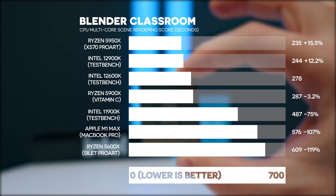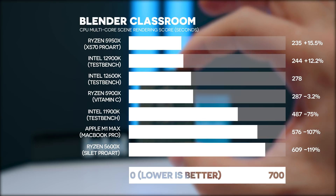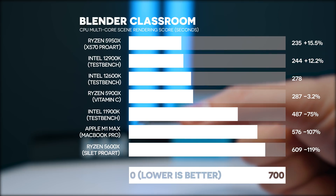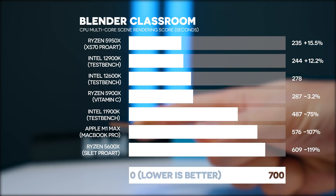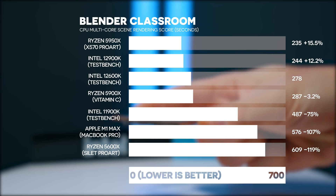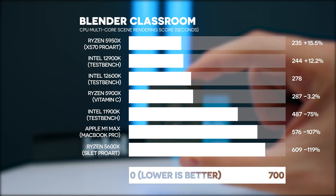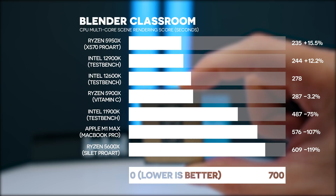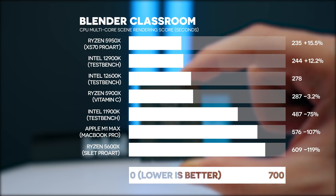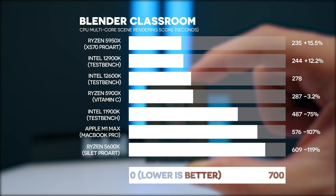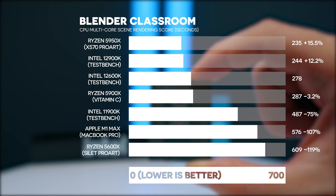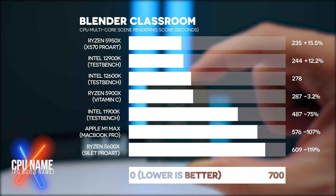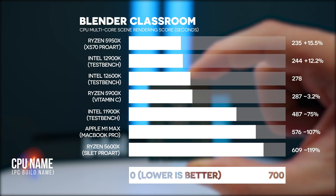If you're a video editor, this 12600K is absolutely amazing especially for the price point. Moving on to 3D and rendering in Blender's Classroom benchmark: the 5950X shines here and is 15.5% faster than the 12600K. The 12900K is 12.2% faster. Interestingly, the 12600K with 10 cores beats the 5900X's 12 performance cores by 3.2%. The 11900K is 75% slower, the M1 Max is 107% slower, and the 5600X is 119% slower.